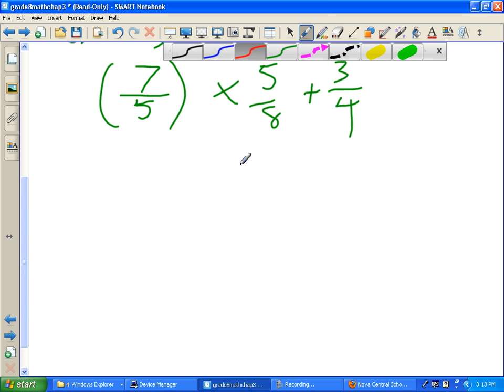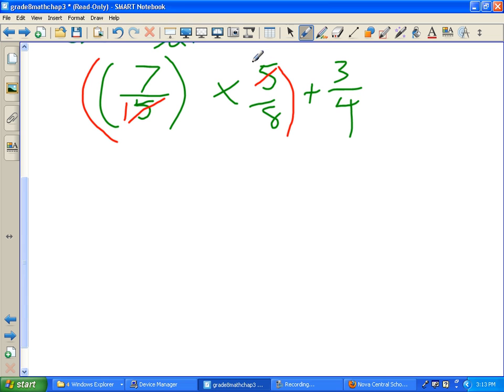So next step, do we do multiplication or addition? Well, we always do multiplication first. So let's do that. And don't forget, you can cross-simplify this one and this one. So 5 goes into 5 once, and 5 goes into 5 once. So now 7 times 1 is 7. 1 times 8 is 8. And here's what we've reduced it all to.